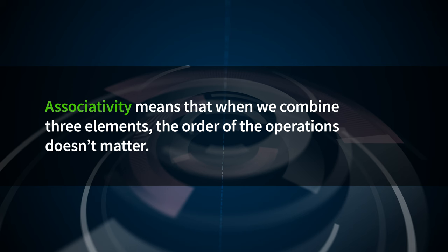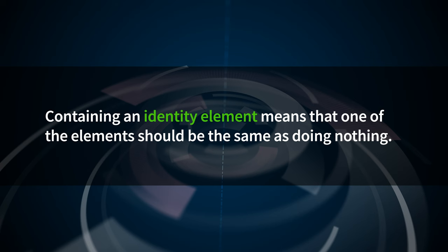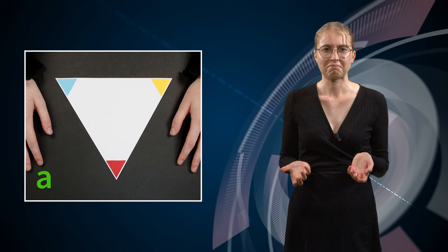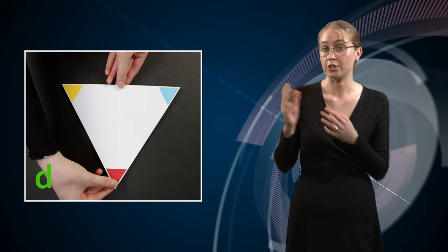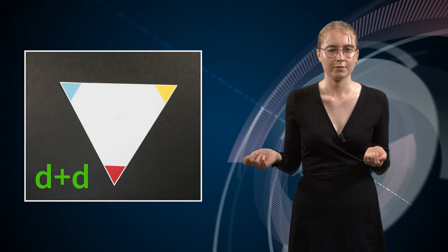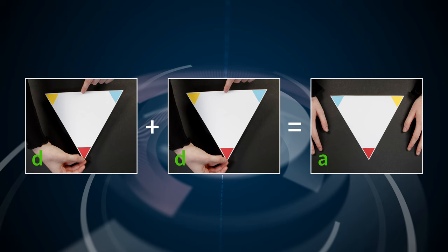Next, we know that the group has to satisfy a property called associativity. This one is simple — it means that when we combine three elements, the order doesn't matter. We also know that the group must contain an identity element. This just means that one of the elements should be the same as doing nothing. For us, this is of course action A. You might think this is silly to include, but containing this element is actually very important to the structure of the group. Without it, we would not be able to say that the group satisfies closure. Imagine you apply action D and then apply action D again — the triangle is exactly back to where we started. So D plus D must be equal to A, which we call the identity element.